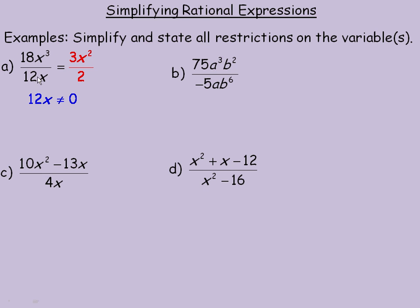Because if this had a value of 0 here, we'd be dividing by 0 and you can't do that. So setting 12x not equal to 0 and then dividing by 12, we would get x is not allowed to equal 0.